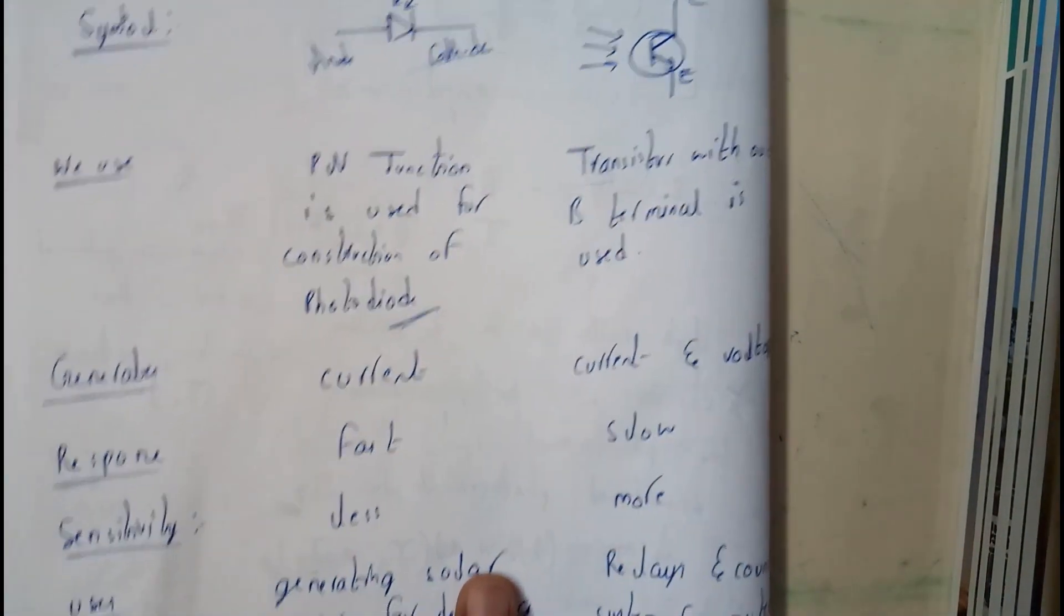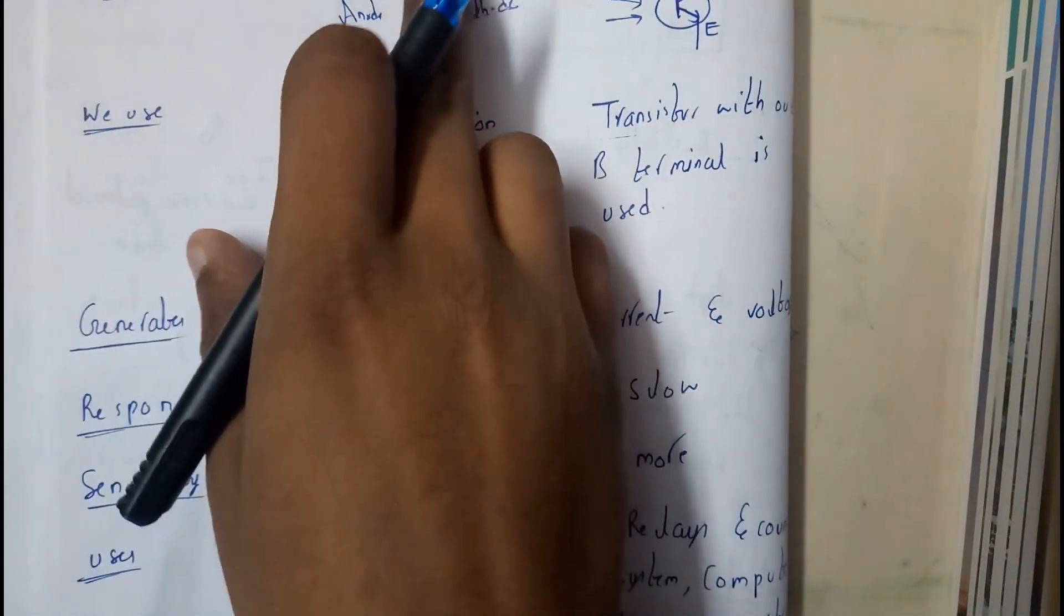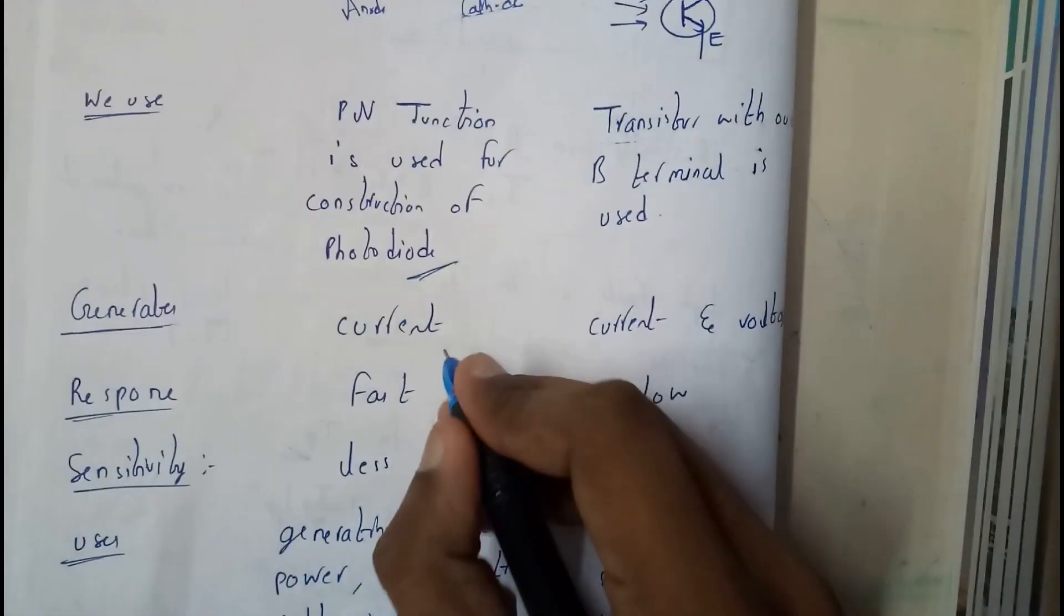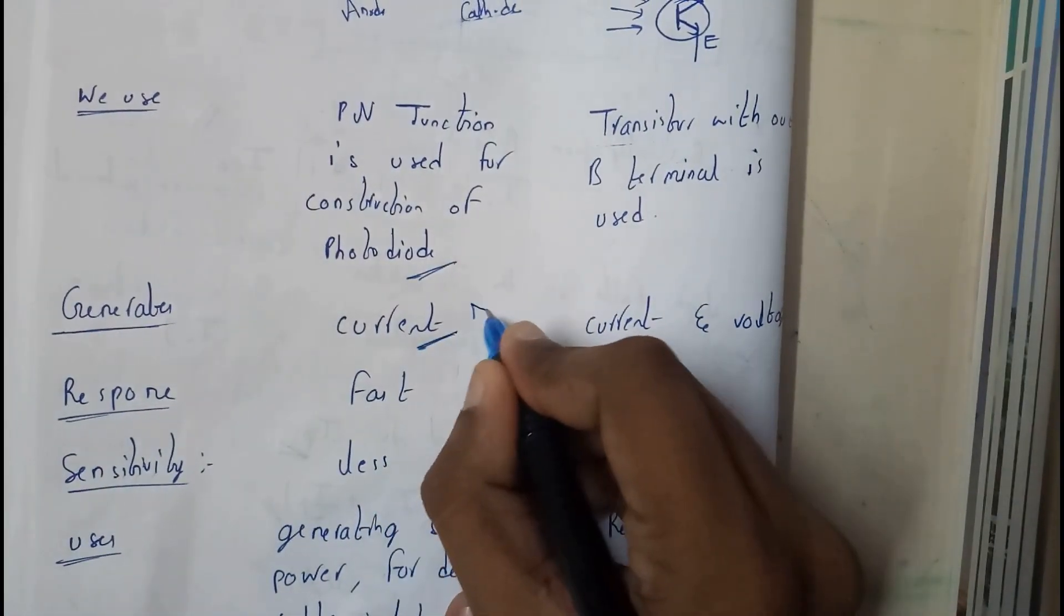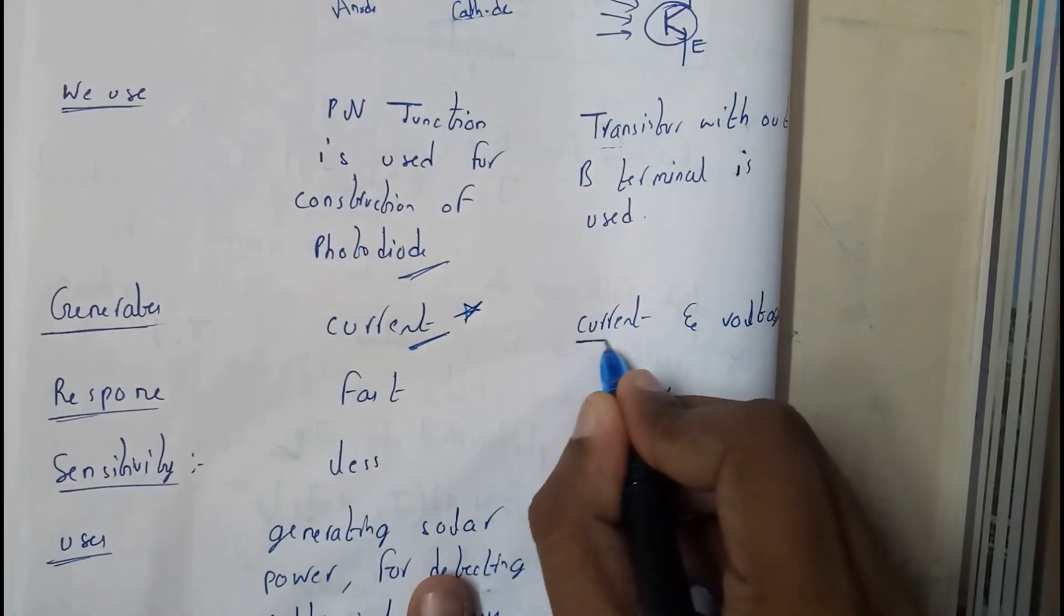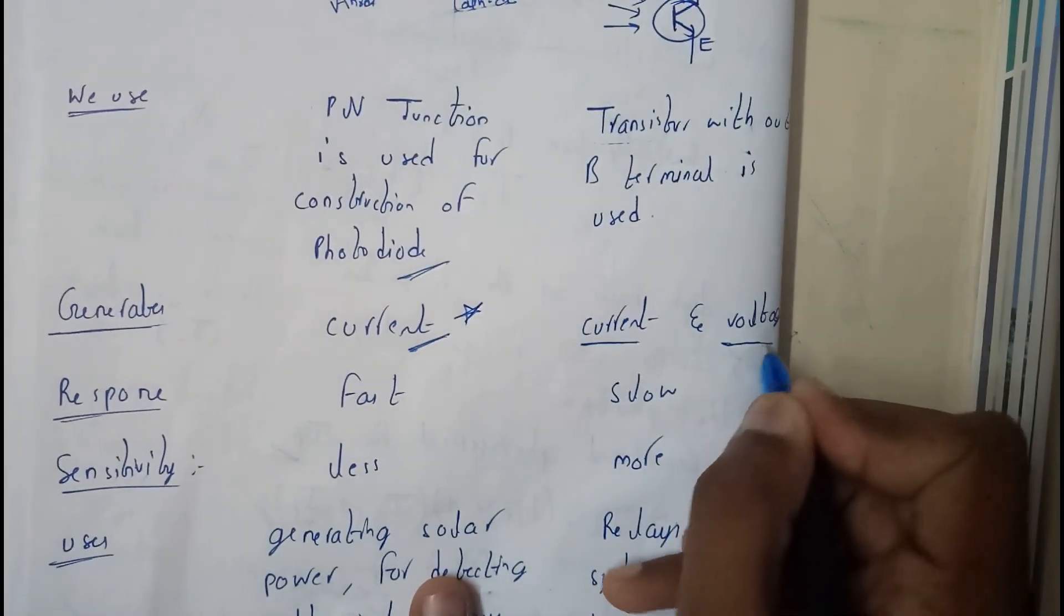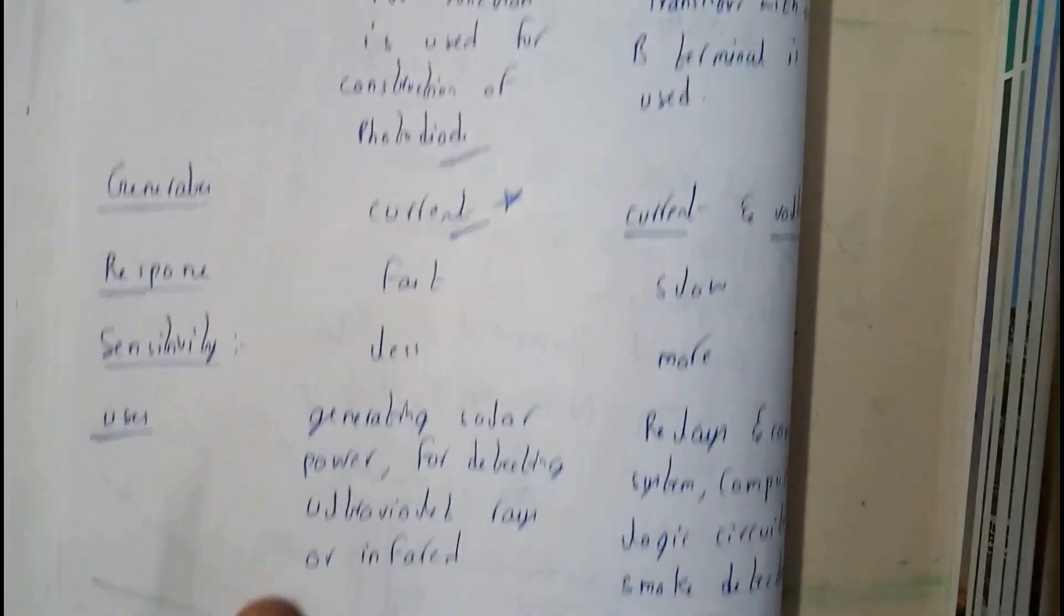So now I hope everyone got a small idea. A photodiode generates only current whereas phototransistor can generate current plus voltage.